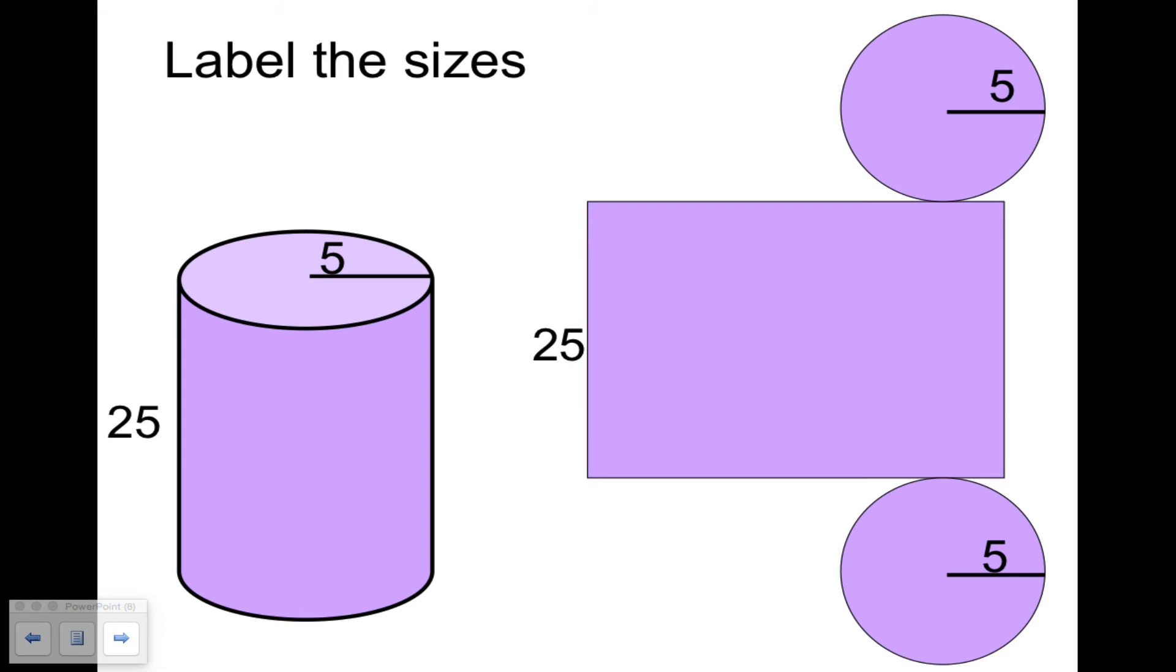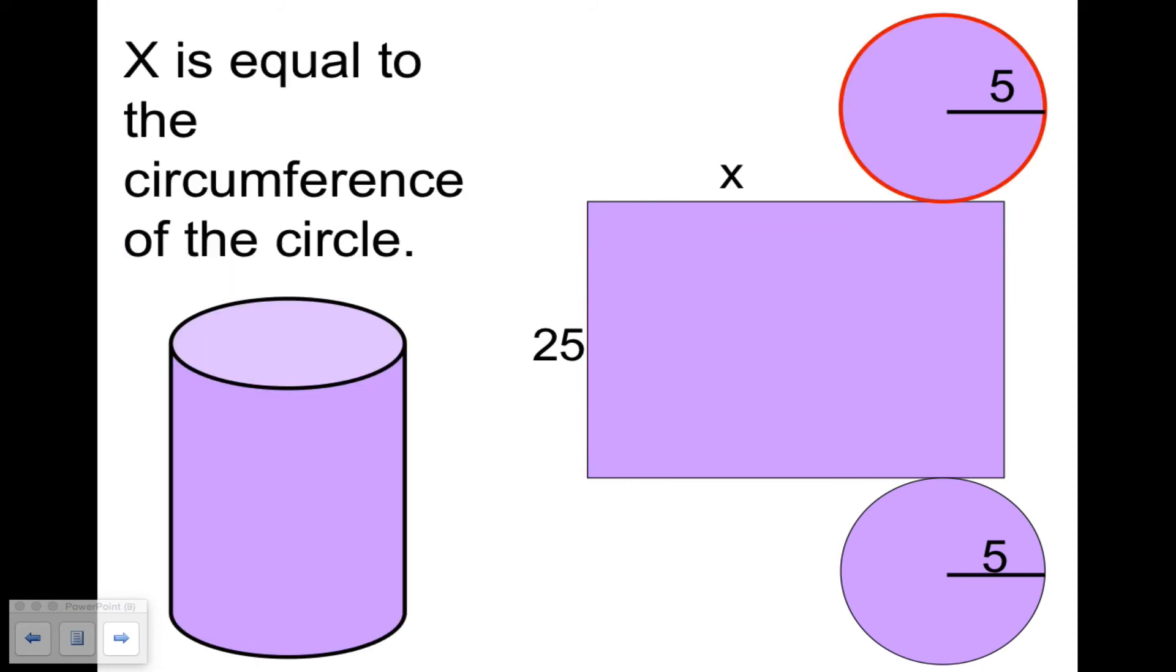We're going to need one more dimension. We're going to need to find this, the width of the label, and for now I'm going to call it x. But I think that x is going to be equal to the circumference of the circle because it would wrap once around. So if we could open up that circumference and lay it out flat, it would equal x. So we need our circumference formula. The circumference is what x will equal, and there it is, the circumference of that circle. So that's going to be equal to 2πr. So x is going to equal 2 times π times the radius.